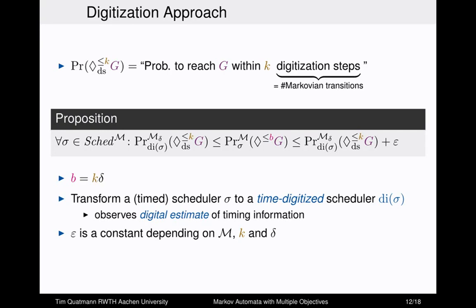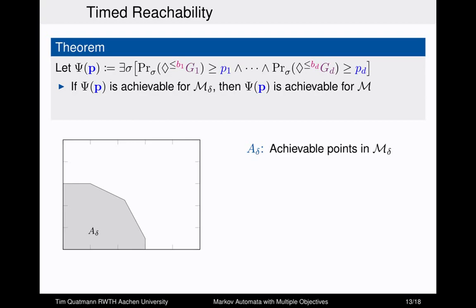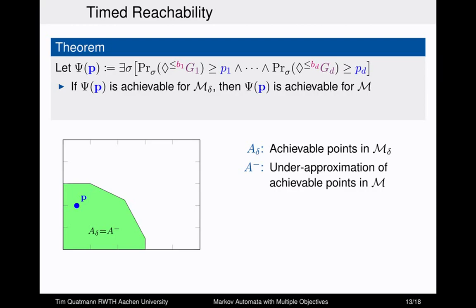We have shown in the paper that the step-bounded reachability probability gives a lower bound for the timed reachability probability. We also obtain an upper bound: the same probability plus some epsilon, where epsilon is a constant depending on the Markov automaton, k, and delta. For a single objective, this gives lower and upper bounds for timed reachability. This lifts to multiple objectives in a theorem: if point P is achieved in the digitization, it is also achieved in the Markov automaton — giving an under-approximation of the achievable set.